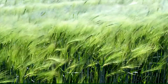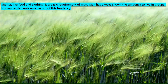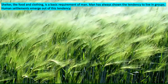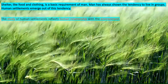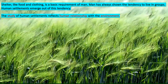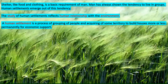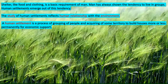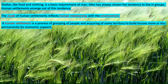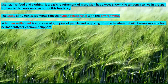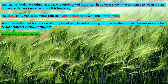Just like food and clothing, shelter is also a basic requirement of man. Since man is a social animal, he has always shown the tendency to live in groups, and human settlements emerge out of this tendency. The study of human settlements reflects human relationship with the environment. A human settlement is defined as the process of grouping of people and acquiring territory to build houses more or less permanently for economic support. In simple terms, a human settlement is a place where people live.